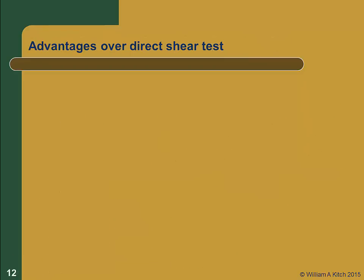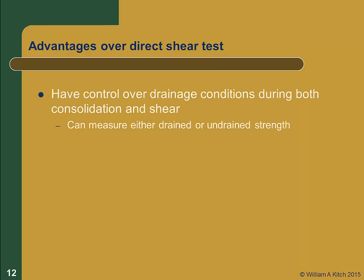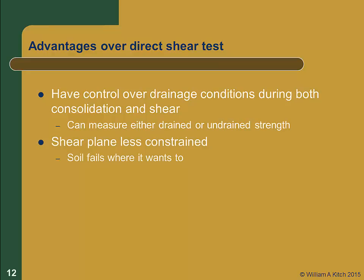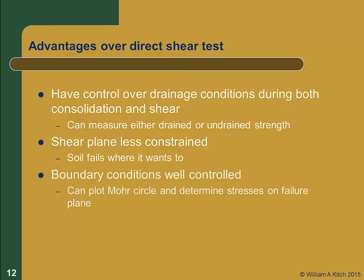Now that we've covered the basic triaxial tests, let's discuss some of the advantages this test has over the direct shear test. The triaxial testing procedure gives us control over drainage conditions both during consolidation and shear, allowing us to measure either the drained or undrained strength of a soil. The shear plane is not confined to a fixed plane as it is in the direct shear test, giving us a more realistic failure surface and a better measure of strength. The boundary conditions are controlled and known, allowing us to plot complete Mohr circles and determine the stresses on the failure plane. Finally, we can measure both axial and volumetric strains during the test, which allows us to measure the stress-strain properties of the soil.